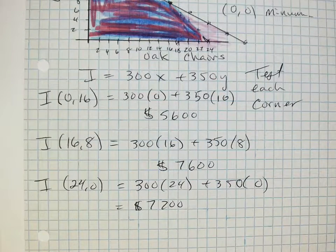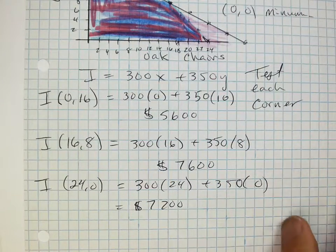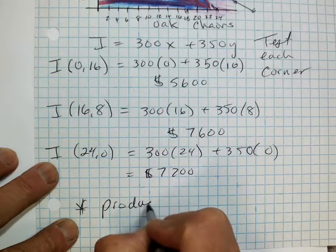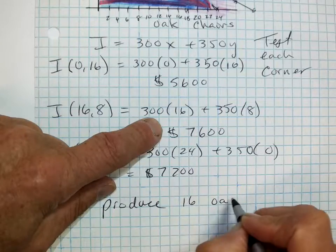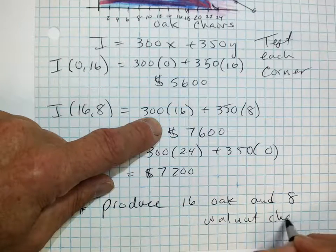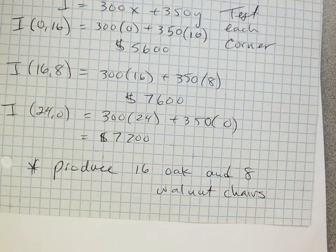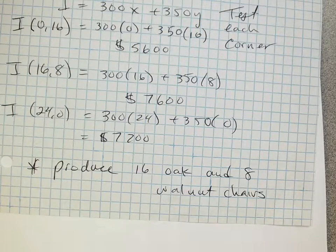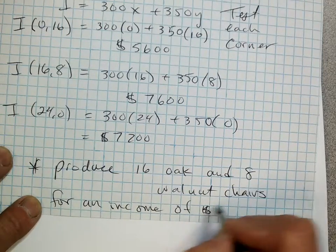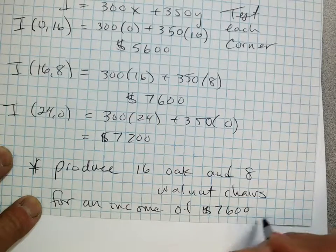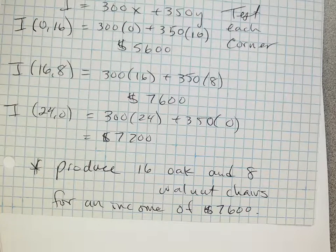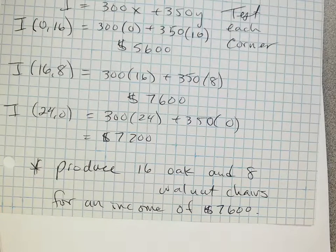In this case, we definitely want to produce. So my answer, let's answer it. Let's answer it for real. So we want to make or produce 16 oak and 8 walnut chairs. Let's answer the question. We're going to go to our boss. We're going to produce. Here's what I want. I want you to produce 16 oak chairs and 8 walnut chairs for an income of $7,600. How's that? That's called linear programming. Questions? Thumbs up? Okay, let me go ahead and push. Thanks. I'm glad you're here.